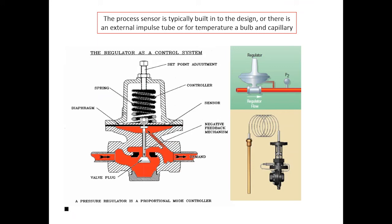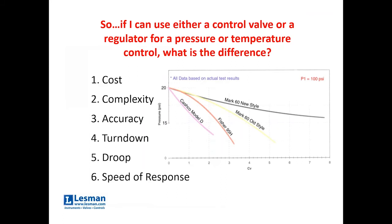If you look up to the right, there's two other examples of how it could happen. There's that little green box, there's a pressure regulator with an external piece of tubing going out and tapping into the downstream pipe. So, that's where it's picking up the process variable, in this case, pressure. In the tan box below it, we go back to a temperature unit with the classic capillary. So, the question on the slide: if you can use either a control valve or a regulator for pressure or temperature control, what's the difference?